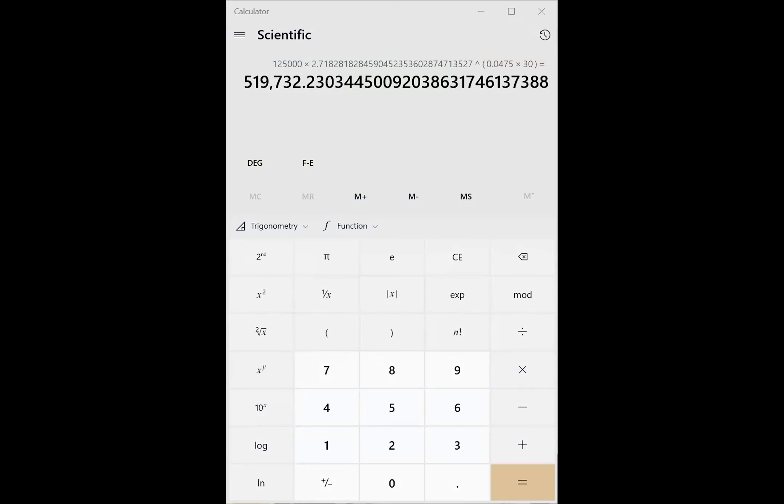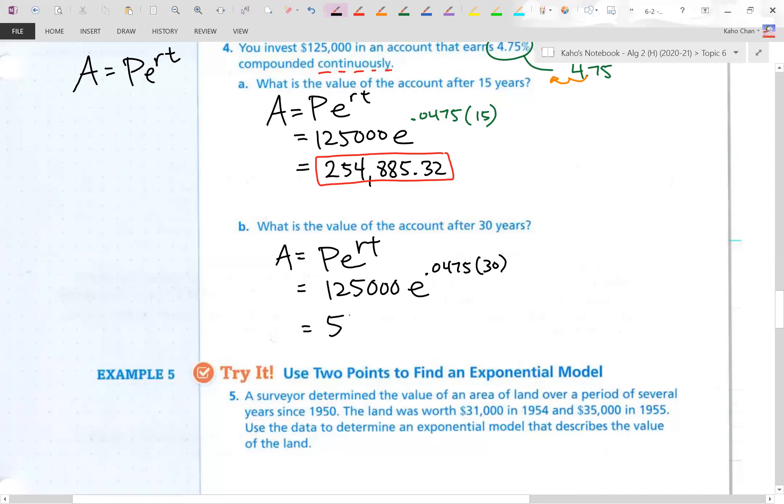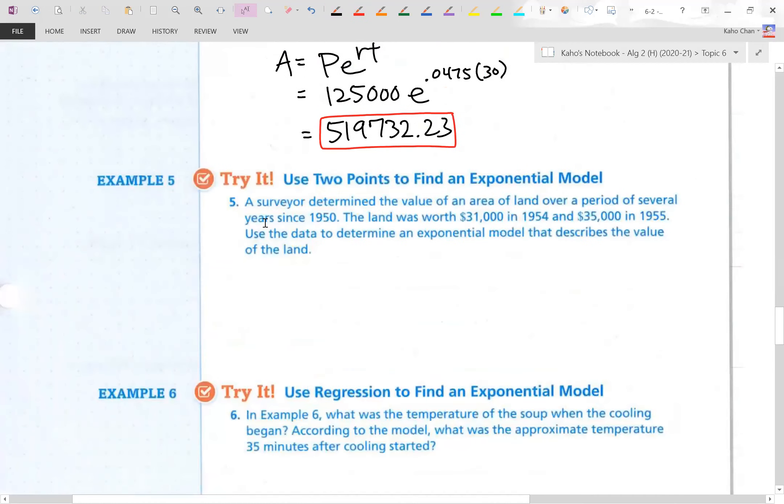Let's write that down. Here we go. And that, ladies and gentlemen, is compound continuously. All right, number five is a challenging problem. We are actually going to come up with an equation based off of data values for the years 1950, 1954, 1955. A survey determined the value of area of land over a period of several years since 1950. The land was worth $31,000 in 1954 and $35,000 in 1955. We're actually going to extrapolate a model based off of these data points. That's what we're doing.